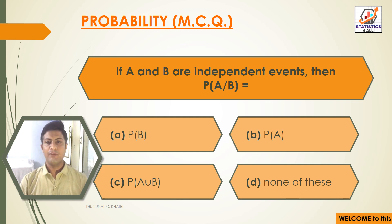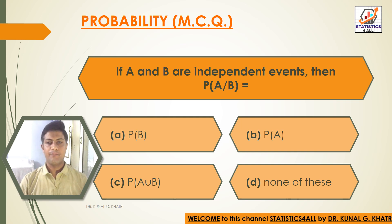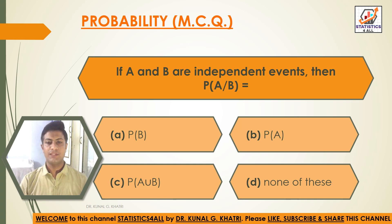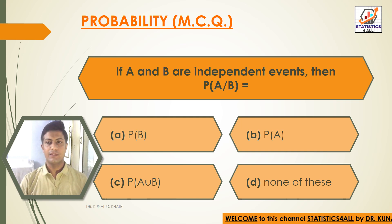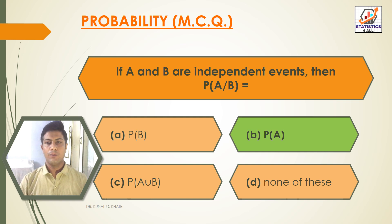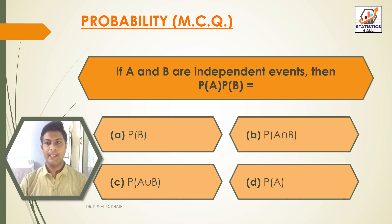Question 16: If A and B are independent events, then P(A|B) equals? Option A: P(B). Option B: P(A). Option C: P(A∪B). Option D: None of these. Answer: Option B — If A and B are independent events, then P(A|B) = P(A).